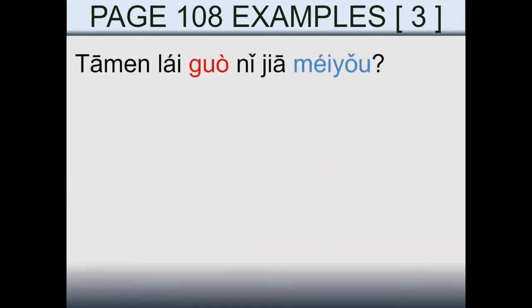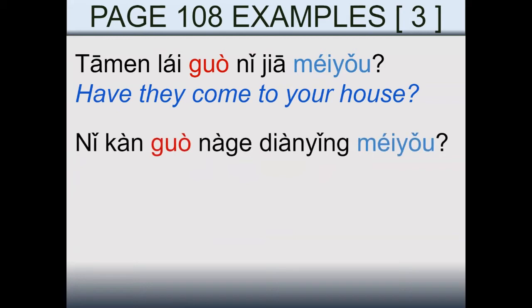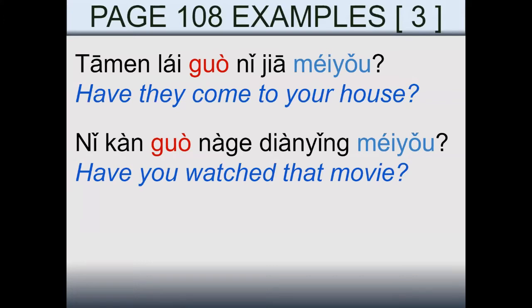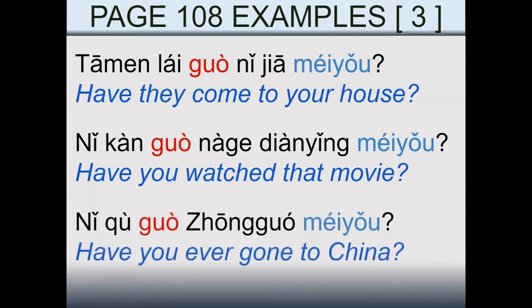Let's see some other examples, now with questions. 他们来过你家没有 — Have they come to your house? Literally: they came to your house, didn't they? 你看过那个电影没有 — Have you watched that movie? 你去过中国没有 — Have you ever gone to China?